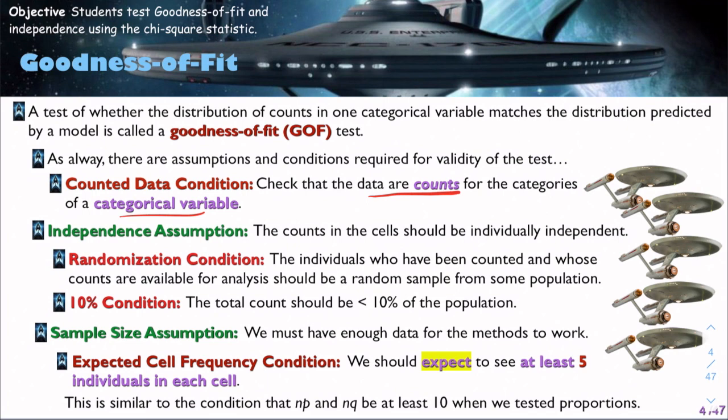We also have a sample size assumption. We must have enough data for the methods to work. Before, when we talked about proportions, we looked at NP and NQ to be greater than or equal to 10. In this case, we should expect to see at least five individuals in each cell.